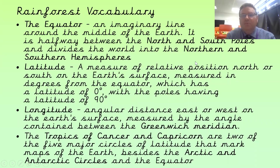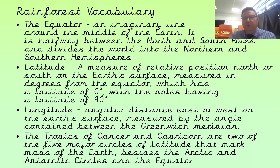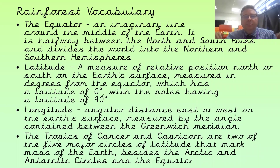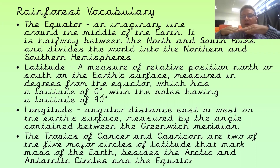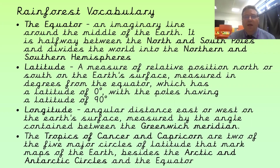The first thing you will need to look at — if you remember from our very first lesson when we looked at the shape of the earth — is where the equator is and what it means. The equator is that imaginary line that goes around the middle of the earth, halfway between the north and south poles, and it divides the world into the northern hemisphere and the southern hemisphere.